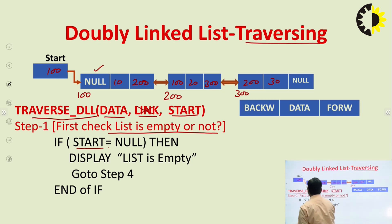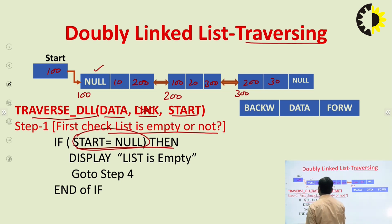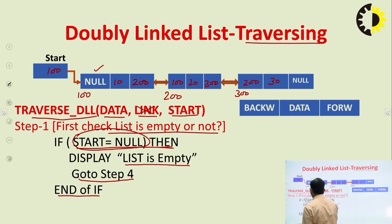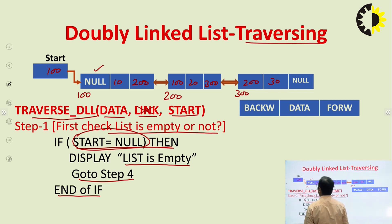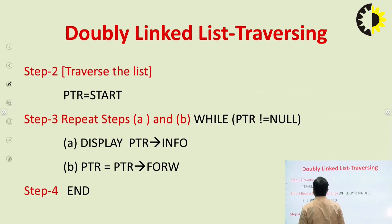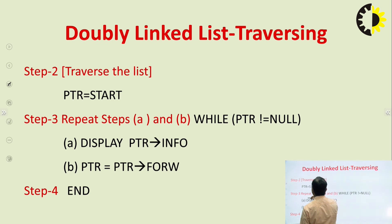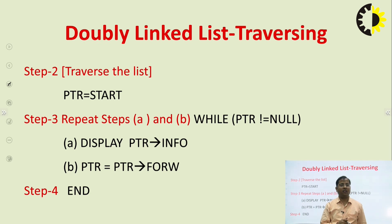For checking, we simply use: if start equals to null, then display 'list is empty', then go to the end. If the list is not empty, we will not update the value of start — we will not traverse using the start pointer directly, because we will not update the value of start during traversing.